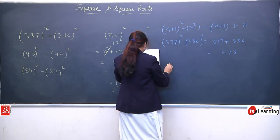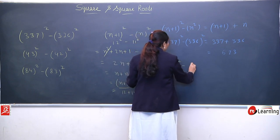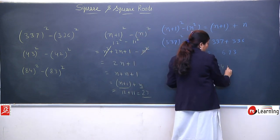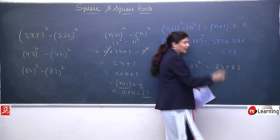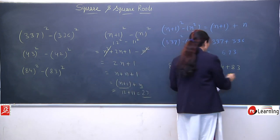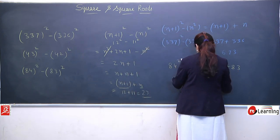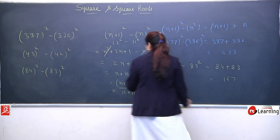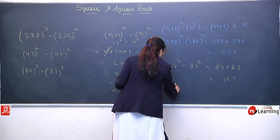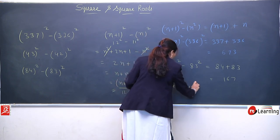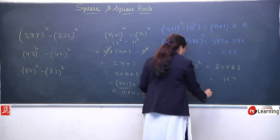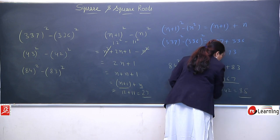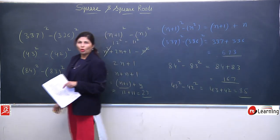In ko hum solve karke bhi de sakte hain, pehle property ka application ek baar samajh lein. Property says: n plus 1 whole square minus n square is equivalent to n plus 1 plus n — successor wala number aur usse ek chota number, un ko hum directly add kar dein. 43 square minus 42 square is equivalent to 43 plus 42 means 85. Teeno ko humne property ke through solve kiya.